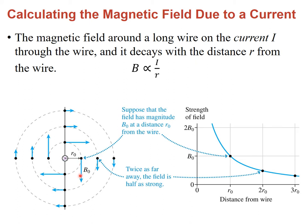A large arrow here means a stronger field, a medium-sized arrow means a medium field, and a very small arrow means a very small field. Since the current is perpendicular to the screen, the field is going to circle around it according to the right-hand rule — pointing down at one point, pointing left at another, pointing up at another, and so on. In terms of magnitude, if we plot the field strength as a function of distance, we know that it goes like 1 over r.